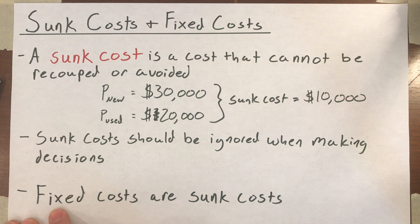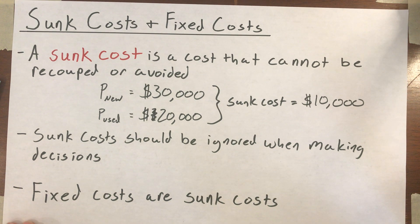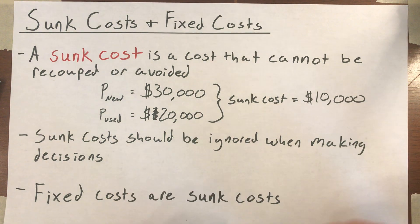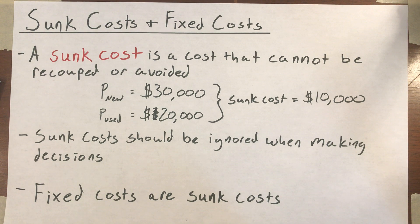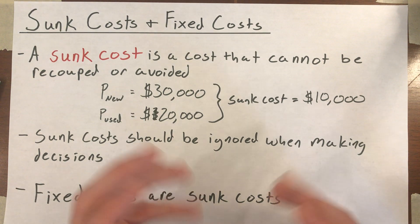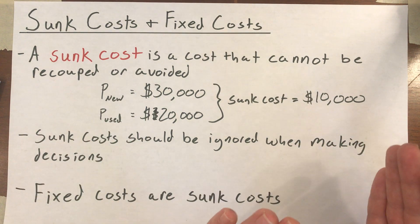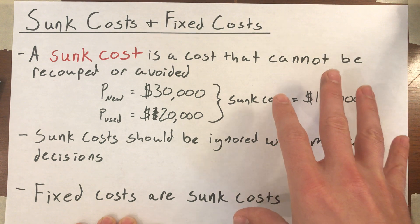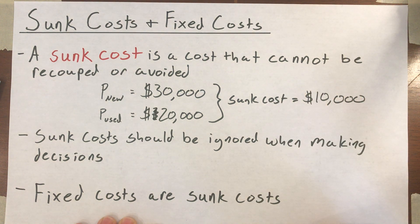The last thing to point out is that fixed costs are sunk costs. Fixed costs are the costs you have to pay whether you produce nothing or a whole bunch of units — like your lease agreement, where you have to pay your landlord rent every month whether or not you make any units. Since you're going to have to pay that rent one way or the other, you shouldn't let that rent payment affect your decision of whether to be producing or how much to produce. That's something I'll get into more in the next video on entry and exit into a market.